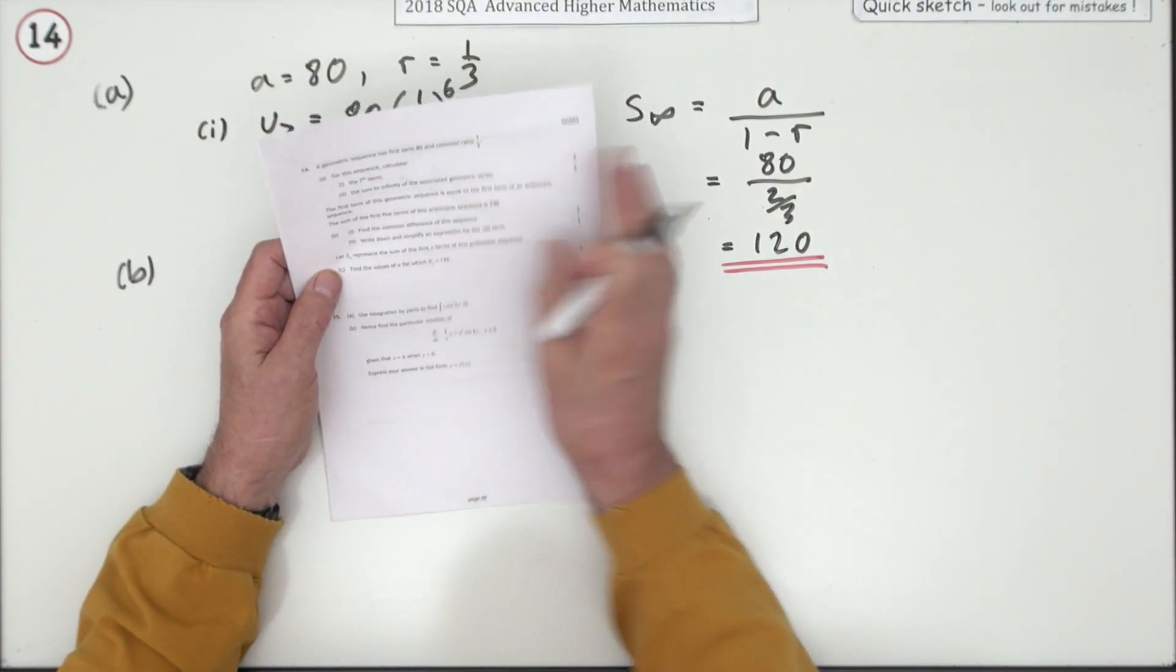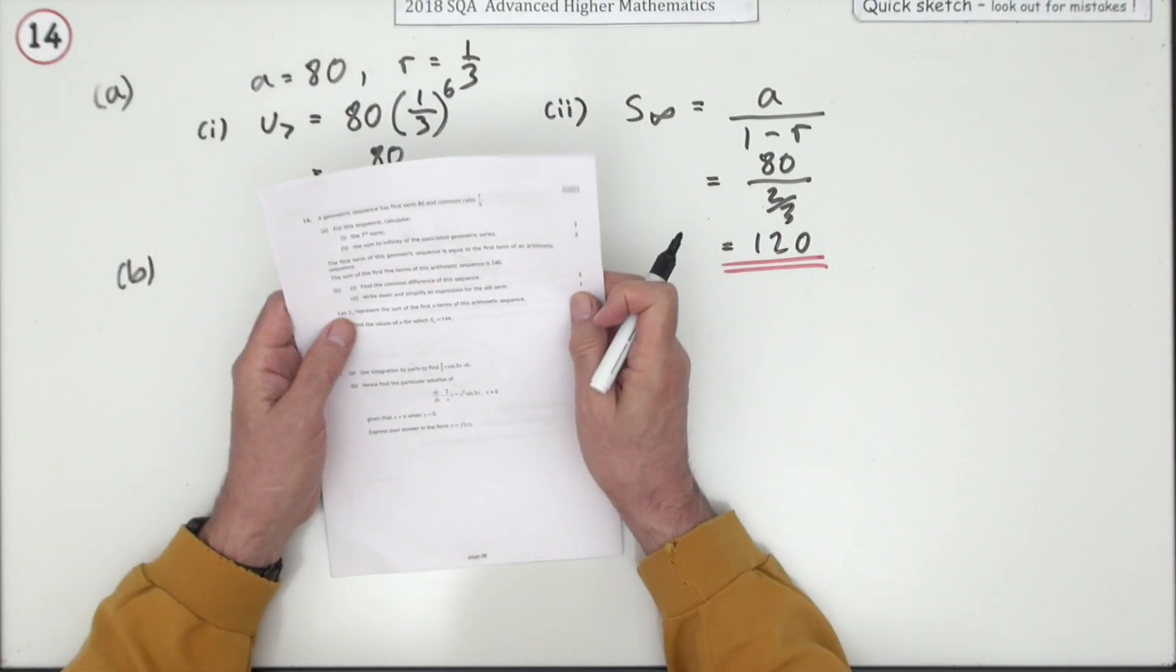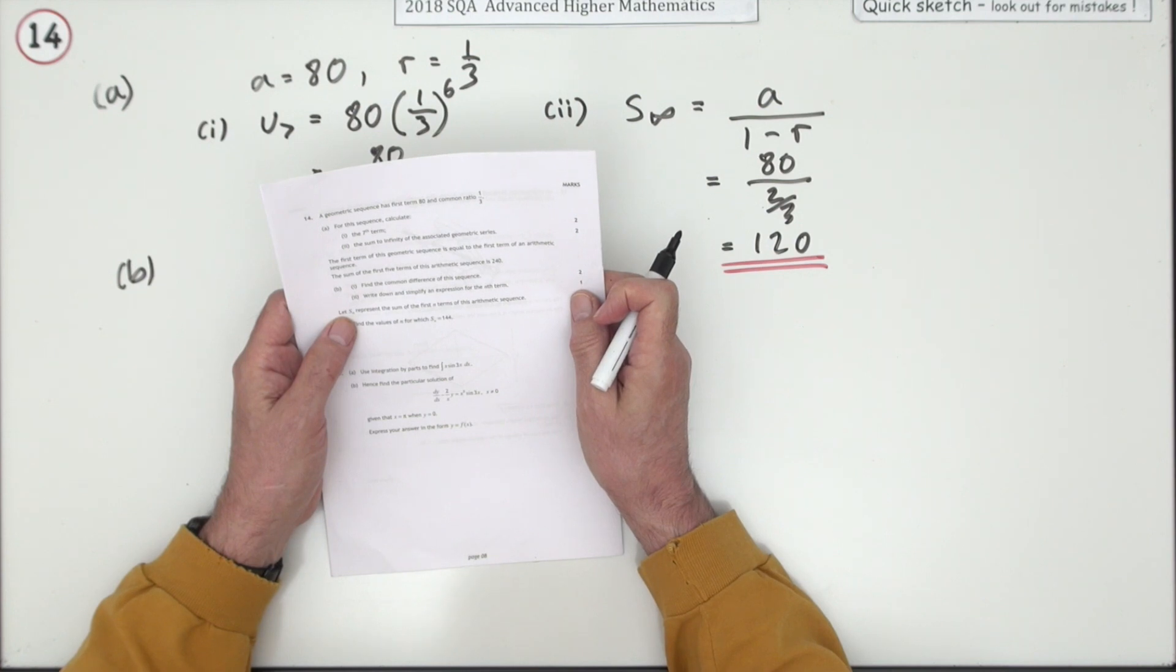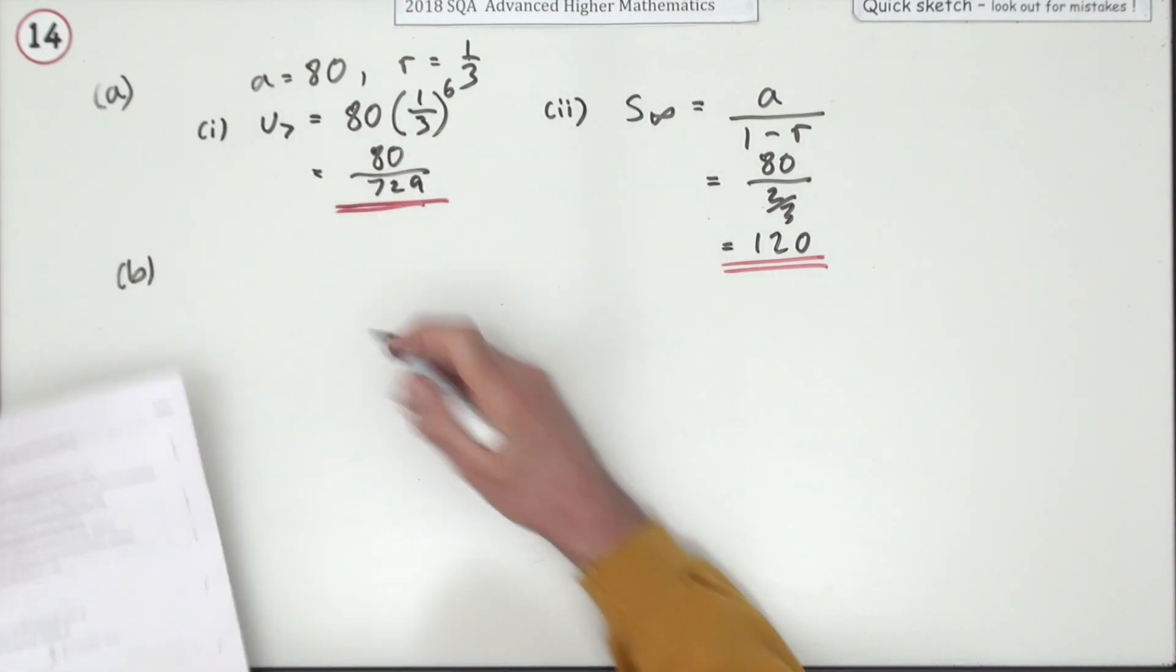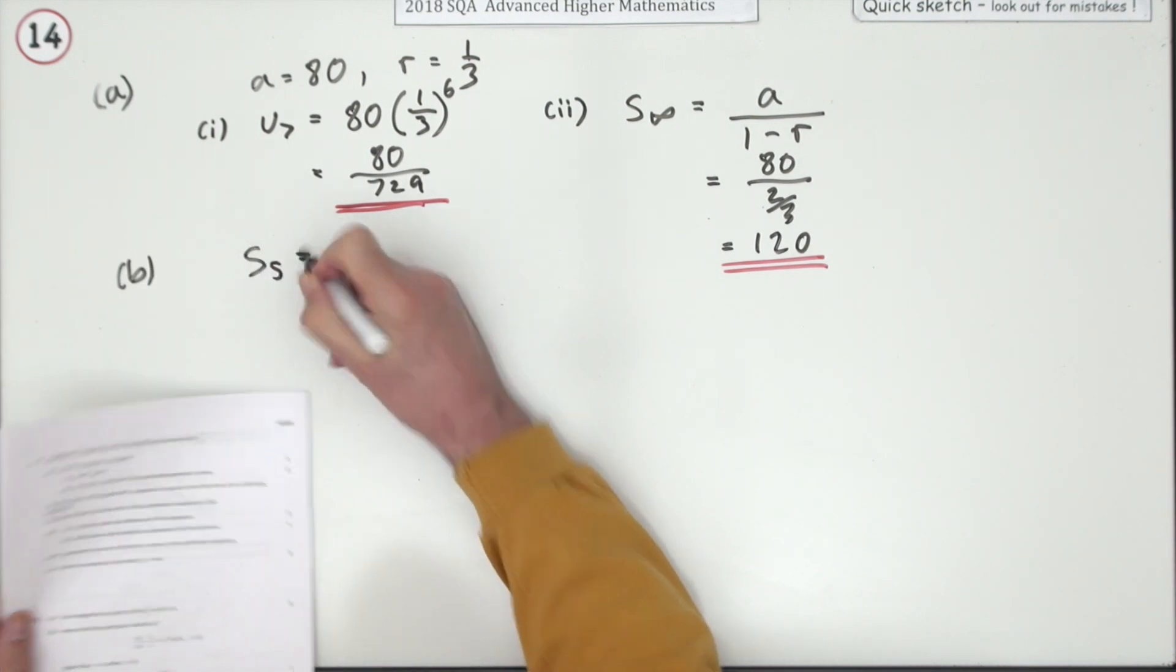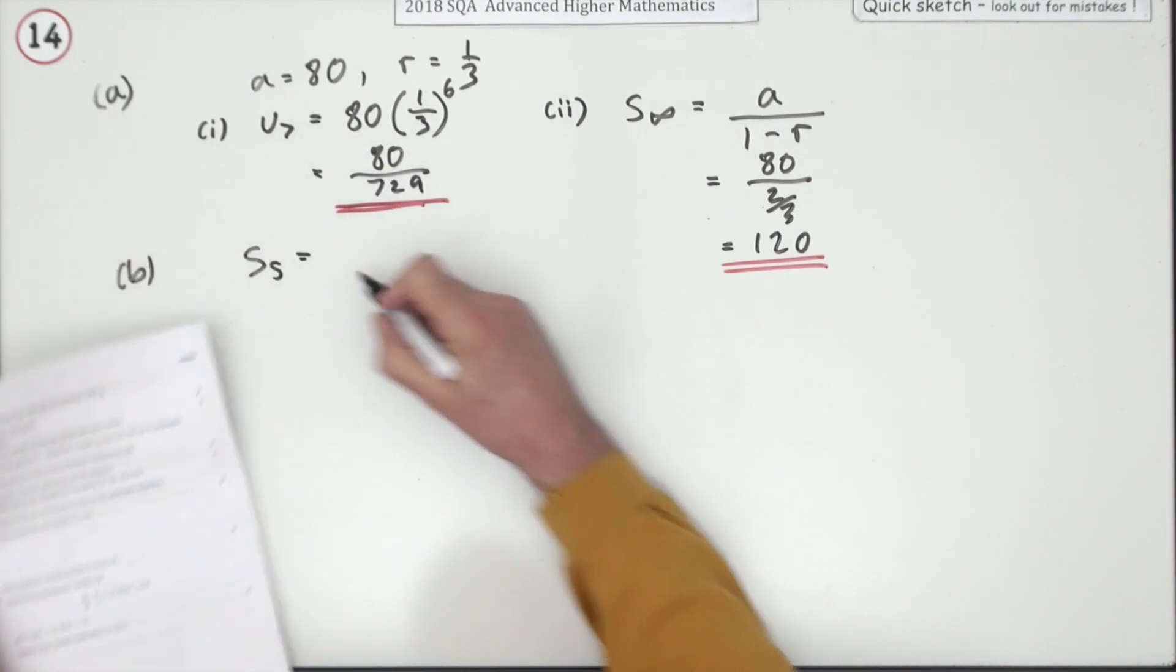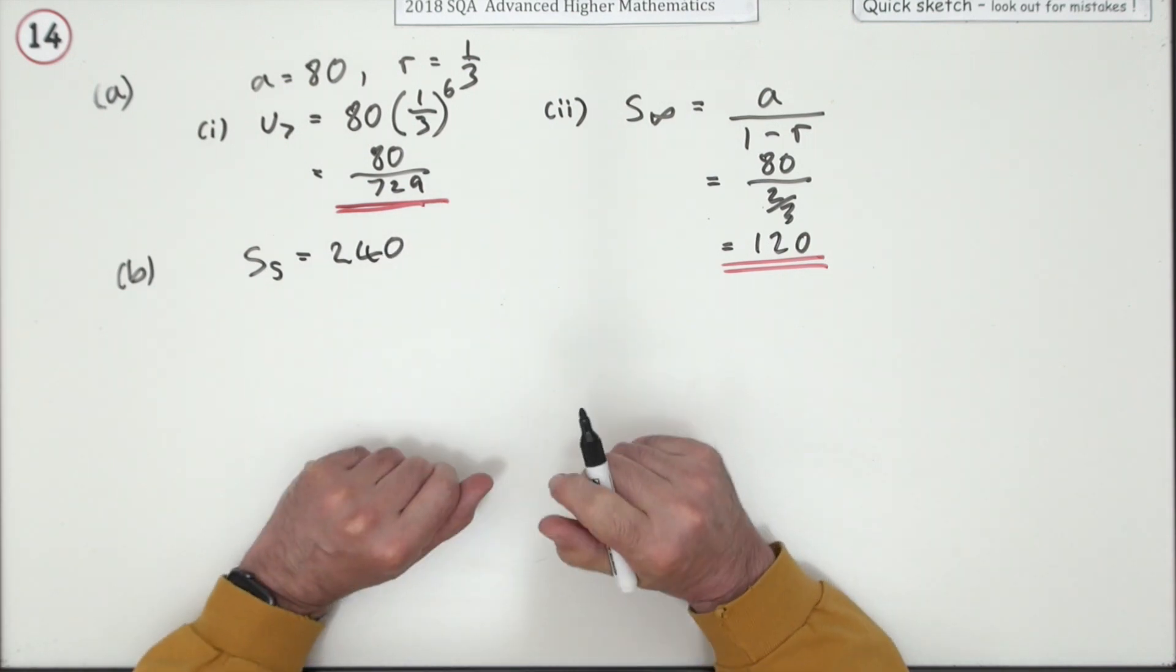Now, the first term of this geometric sequence, 80, is also the first term of an arithmetic sequence. The sum of the first five terms, S5 of the first five terms of this sequence is 240. Well, there's a formula for that.